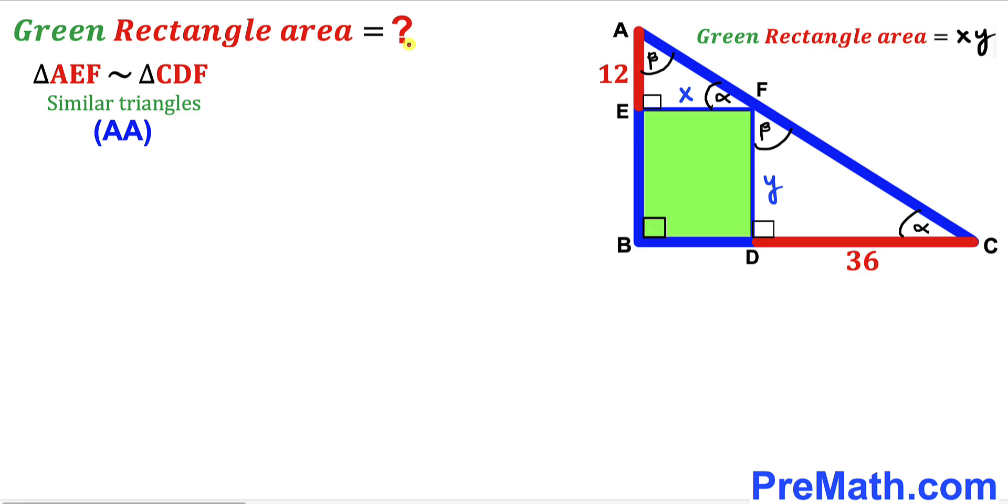Therefore we conclude that these two right triangles, this right triangle AEF and this other right triangle CDF, are similar triangles according to angle-angle similarity theorem. Since these two triangles are similar, we are going to have a proportion.